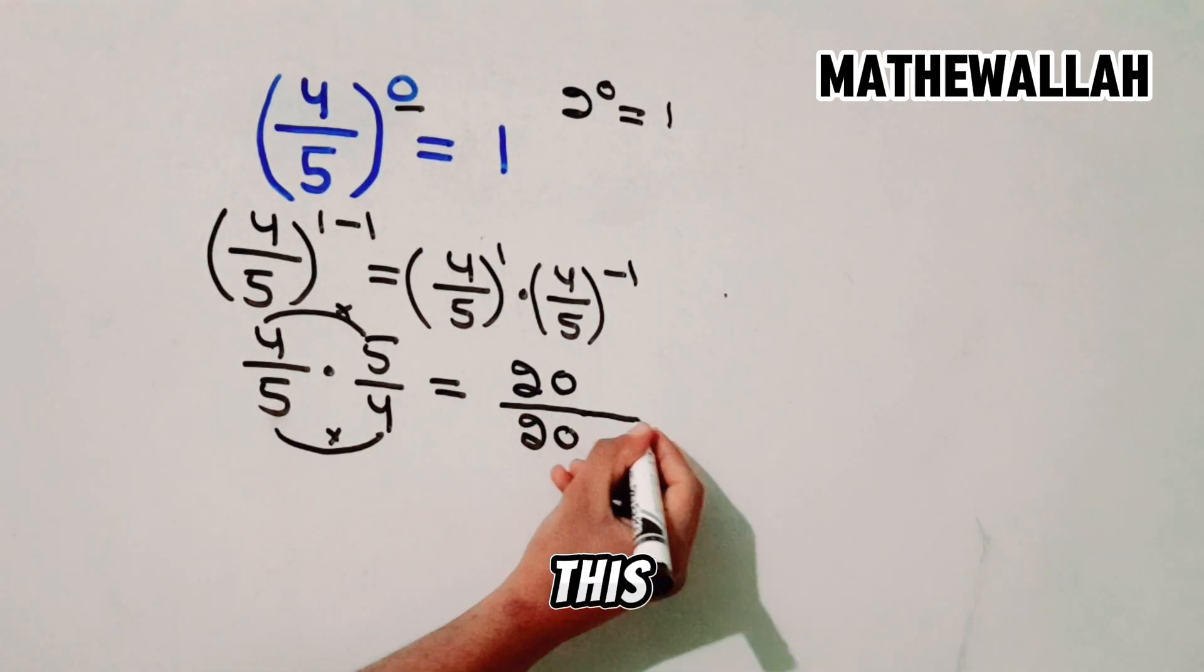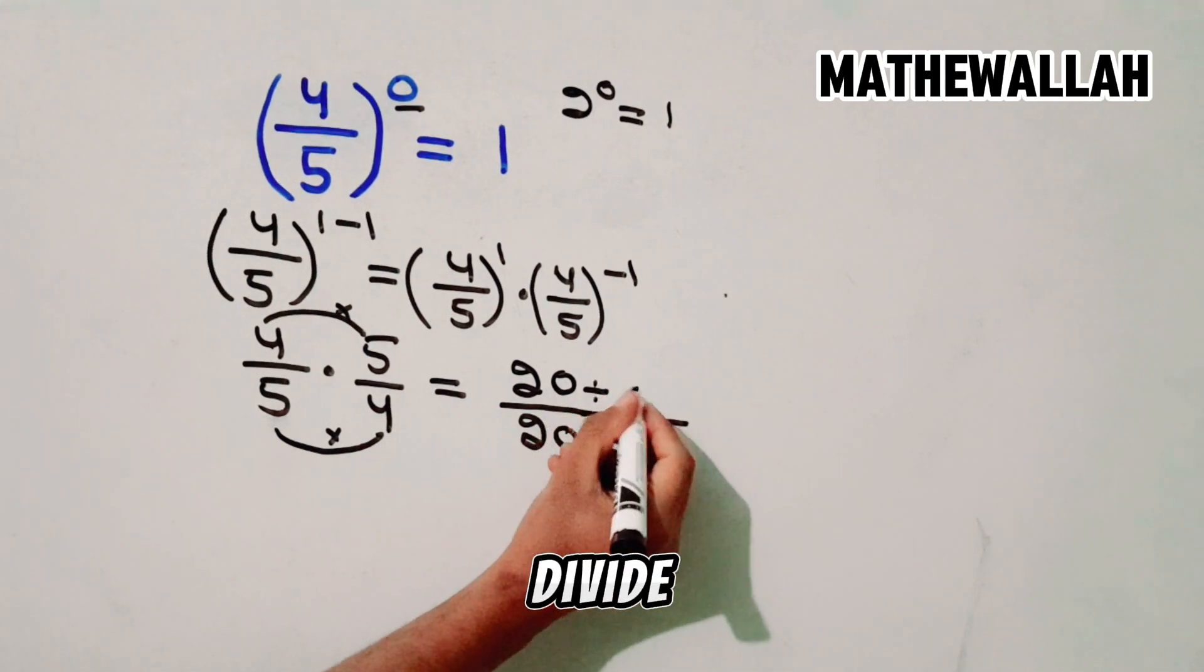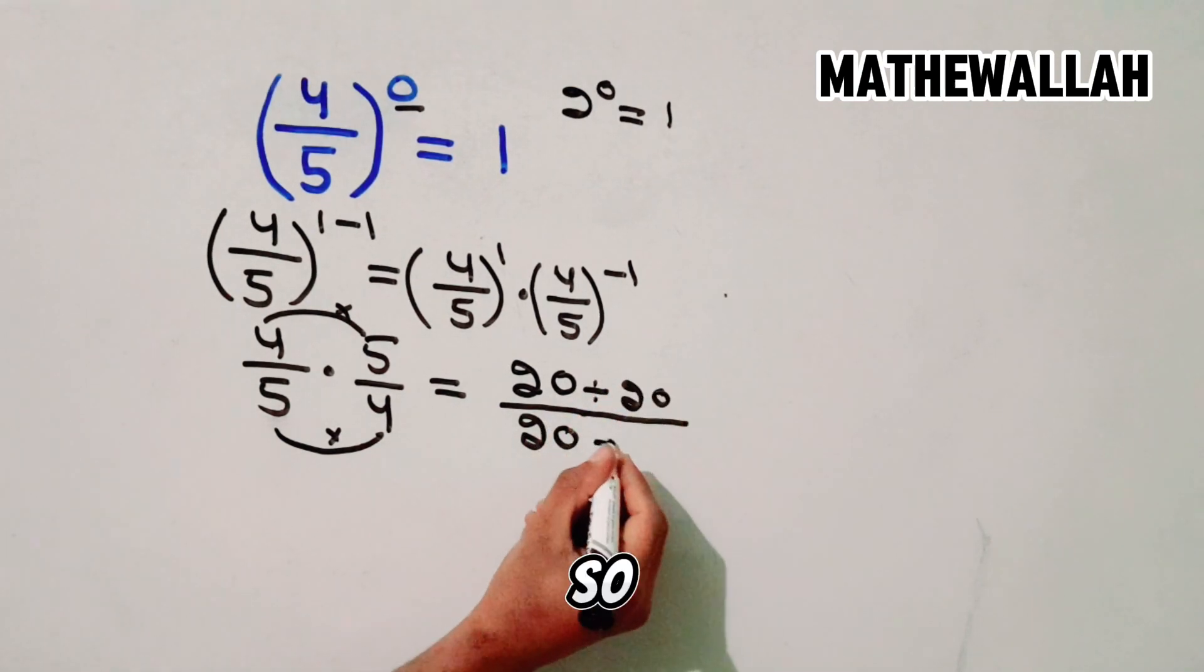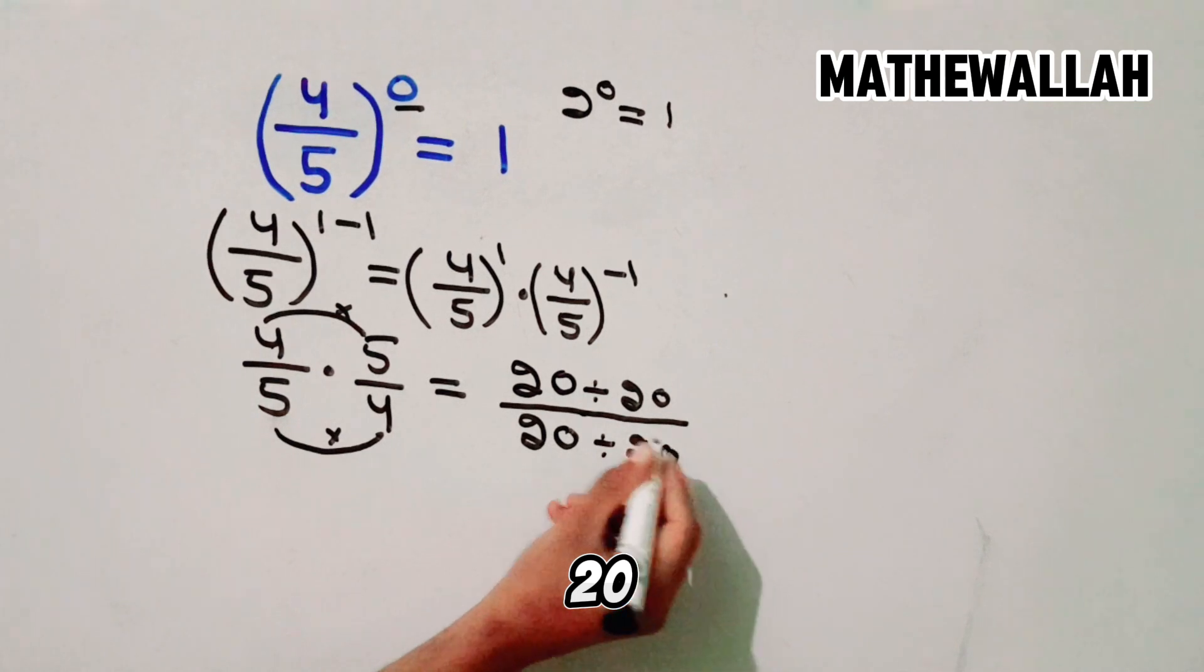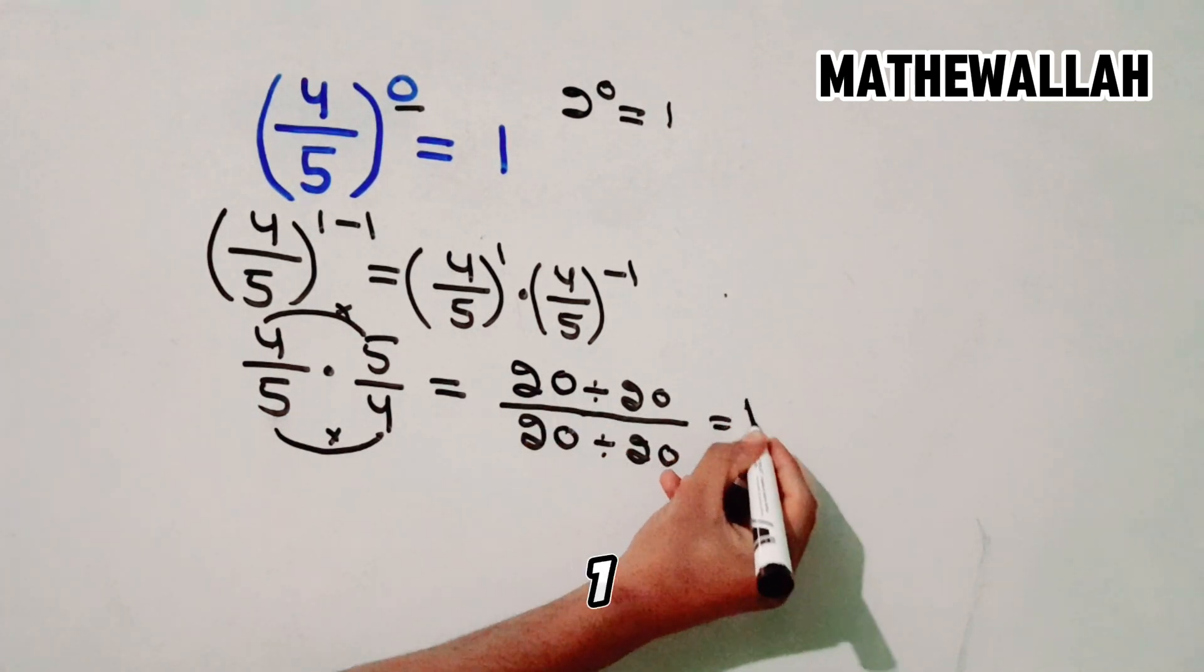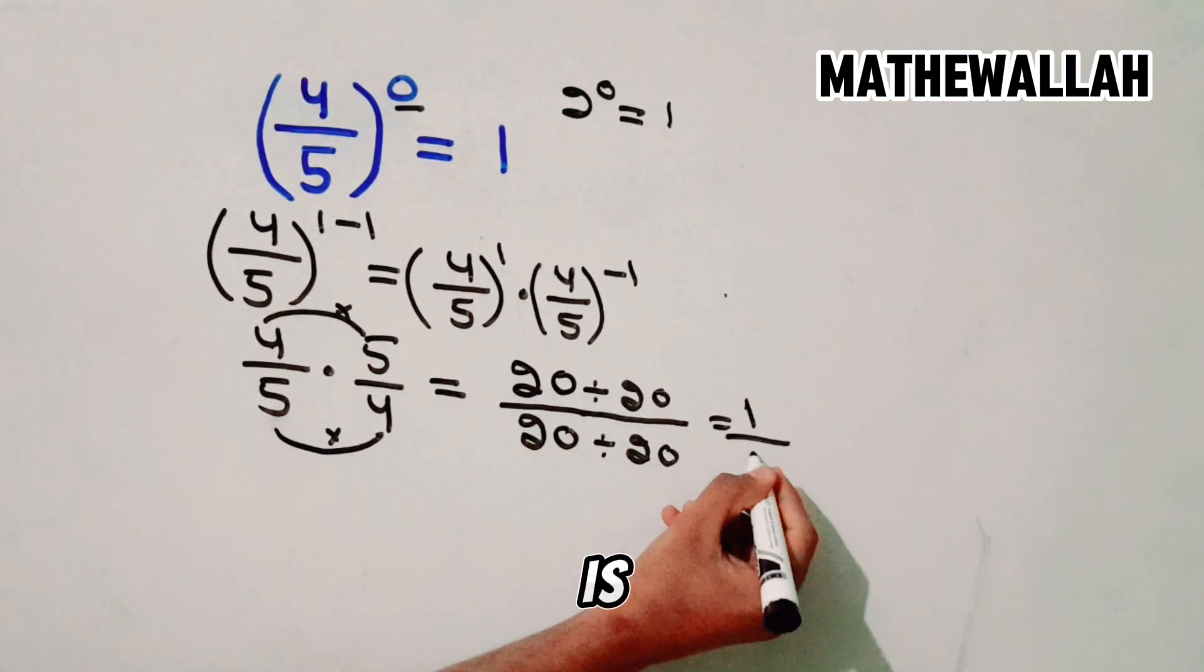So we divide this by 20. Divide both by 20. So it equals to 20 divided by 20 is equal to 1.